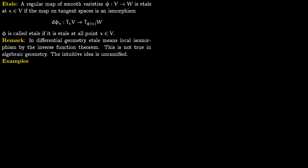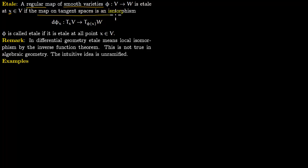In this lecture, we talk about étale morphisms. Say we are given a regular map of smooth varieties: V and W are smooth varieties, and phi is the map going from V to W. This phi is étale at a certain point X on the variety if the map on the tangent spaces is an isomorphism.